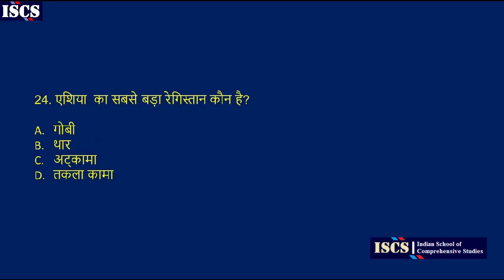Now look at question number 24: which is the largest desert in Asia? Options are Gobi, Thar, Atacama, or Taklamakan. The right answer is option A, Gobi.